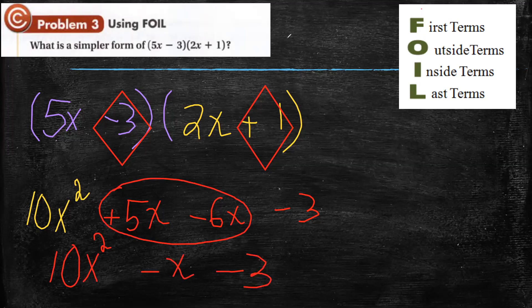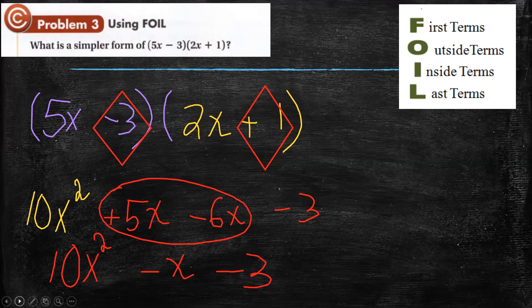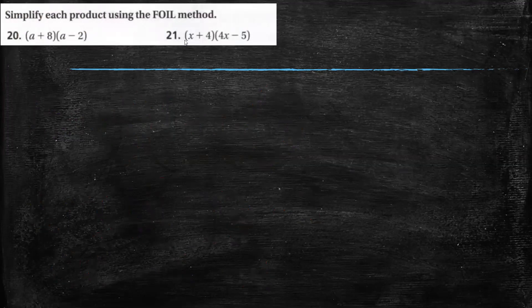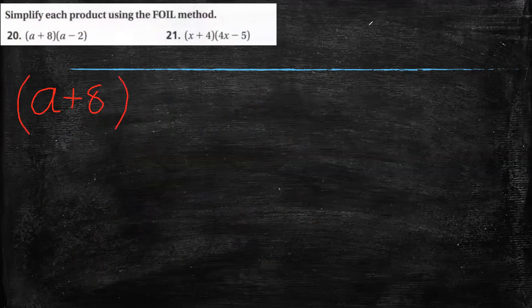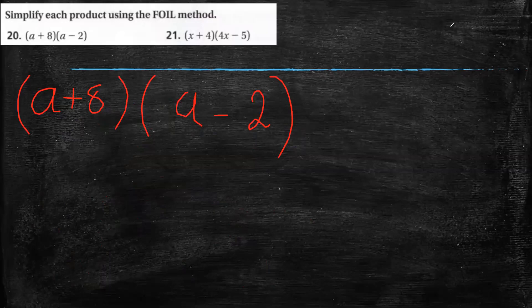Let's have another example. We have a plus 8 times a minus 2. The way is called FOIL. The first step — F means first. These are the first terms: a and a.